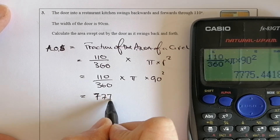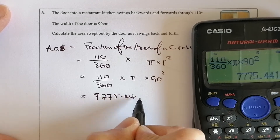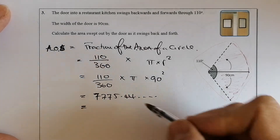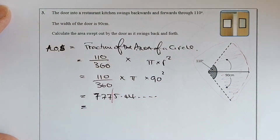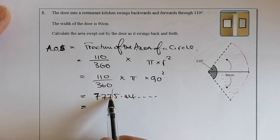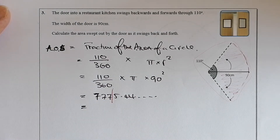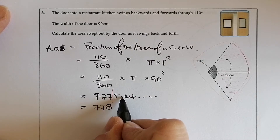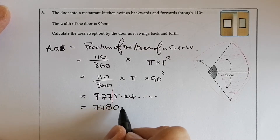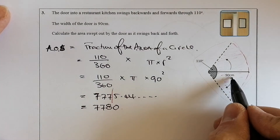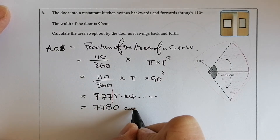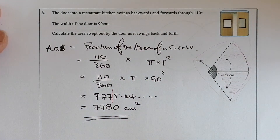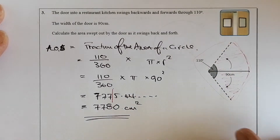That's going to be 7775.44 and continuing. Rounding to three significant figures: one, two, three — cutting the number there. That five rounds the seven up to eight. So I've got 7780, with a zero to show where the decimal point is. Working in centimetres, so it's centimetres squared for area. The area of that sector is 7780 centimetres squared.